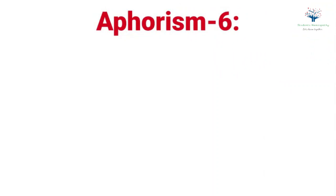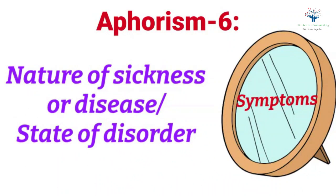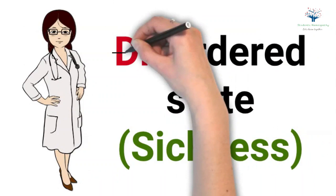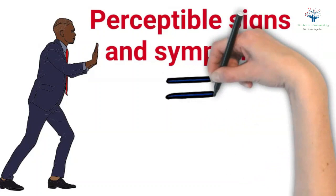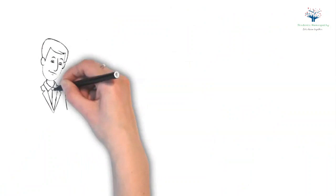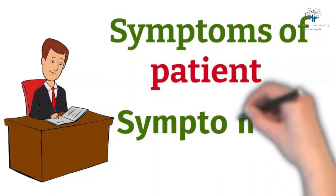According to the aphorism, the symptoms represent the nature of sickness, disease, or state of disorder. What the physician has to do is to correct this disordered state — that is, the sickness. In other words, he has to remove the perceptible signs and symptoms which form the true and only conceivable portrait of the disease. Thus, the physician should focus on and carefully record the symptoms of the patient rather than his organs.